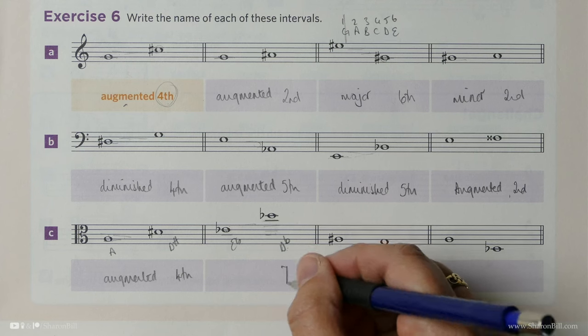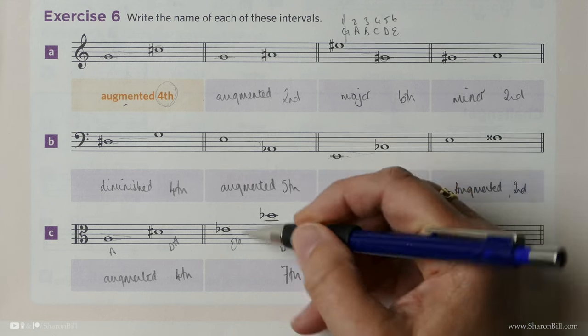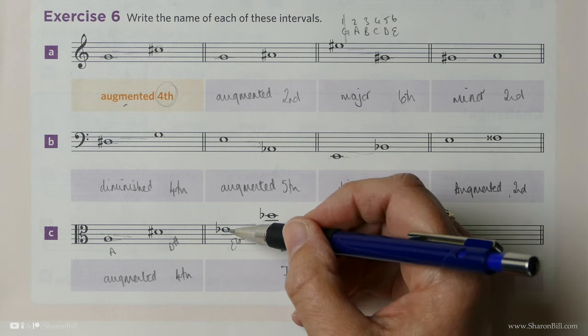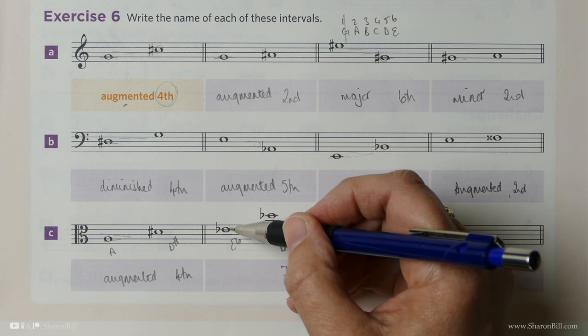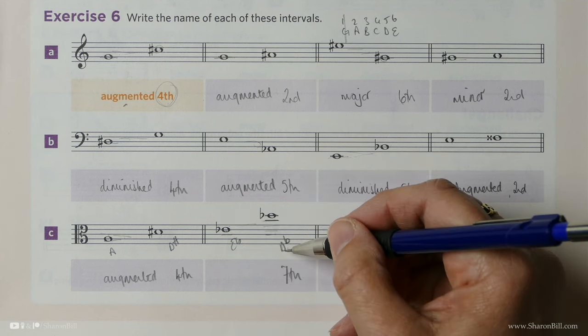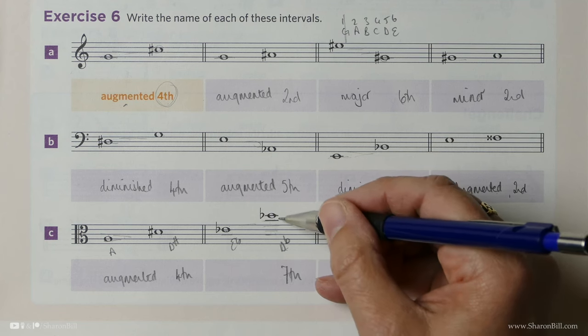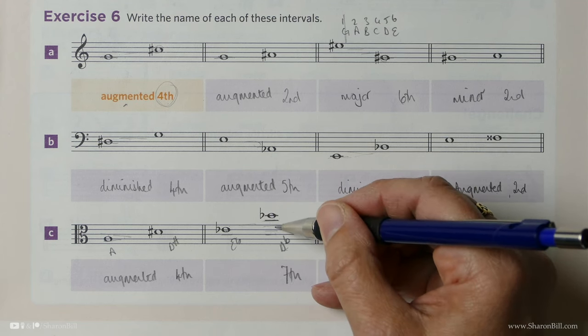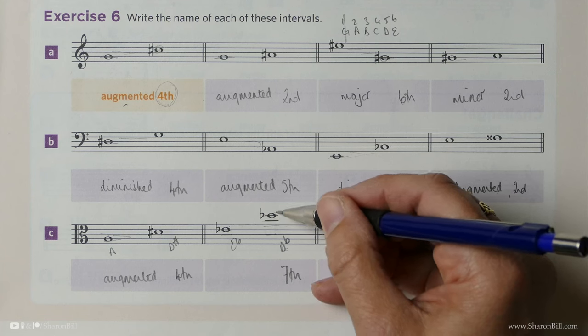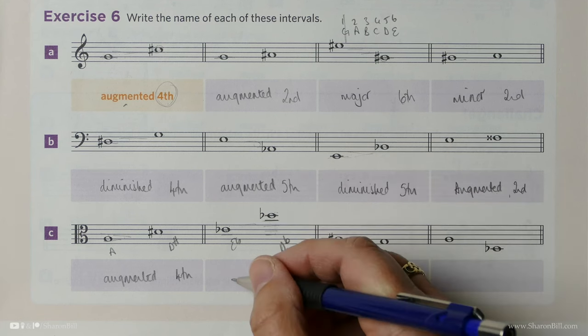Now we know that E flat major has a key signature of B flats, E flats, and A flats. So D flat isn't part of that. D natural would be major. And so the fact that we've come to the flat makes it lower. That makes it a minor 7th.